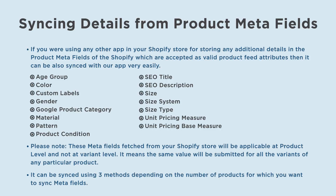Here is a list of product data attributes that can be synced from the product meta fields. Please note, these meta fields fetched from your Shopify store will be applicable at the product level and not at the variant level. This means the same value will be submitted for all variants of any particular product.